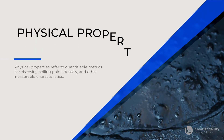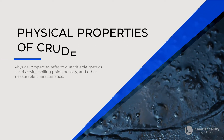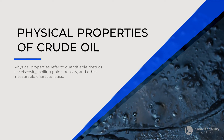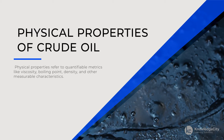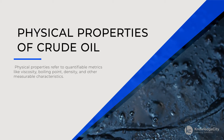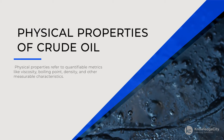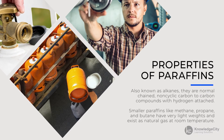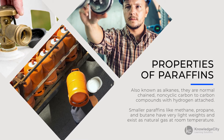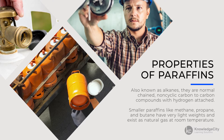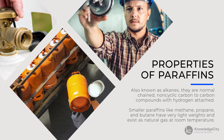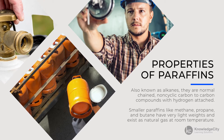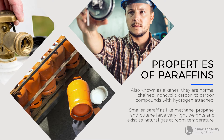Let's look a little closer at the physical properties of crude oil. These differ from chemical properties, which are a measurement of specific properties that are inherent in that compound. Physical properties refer to quantifiable metrics like viscosity, boiling point, density, and other measurable characteristics. Paraffins are the most common hydrocarbon in crude oil composition, making up 15 to 60 percent of the total mass. More commonly known as alkanes in organic chemistry, these are normal-chain, non-cyclic, carbon-to-carbon compounds with hydrogen atoms attached.